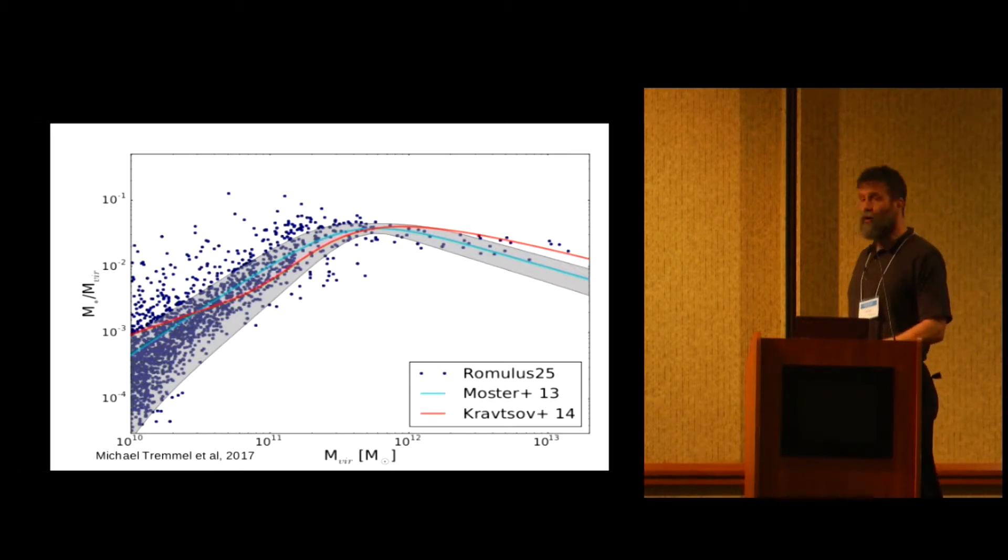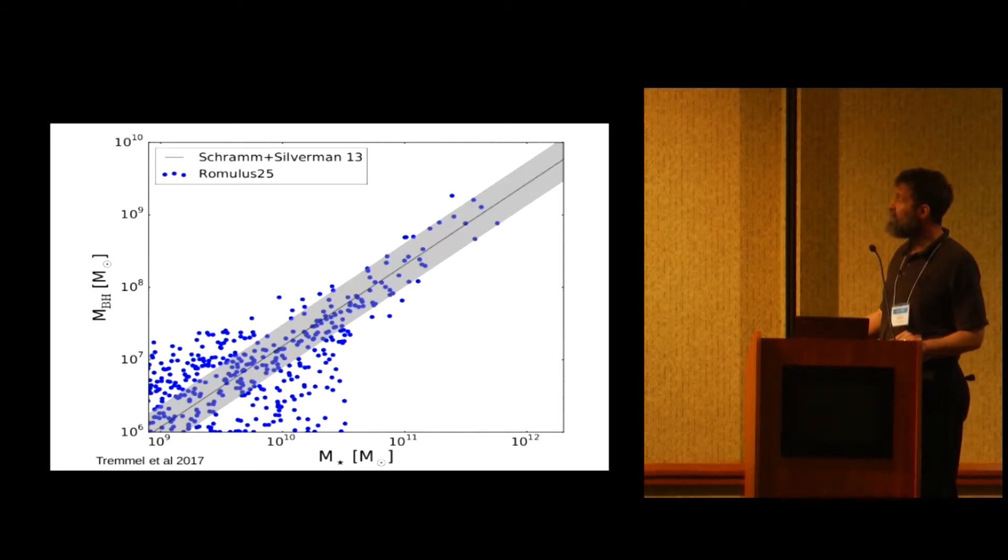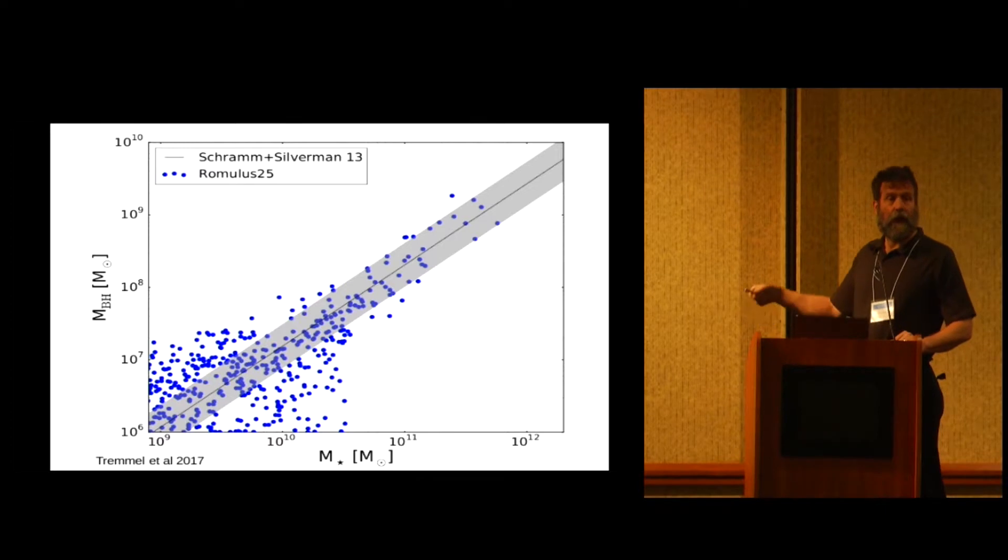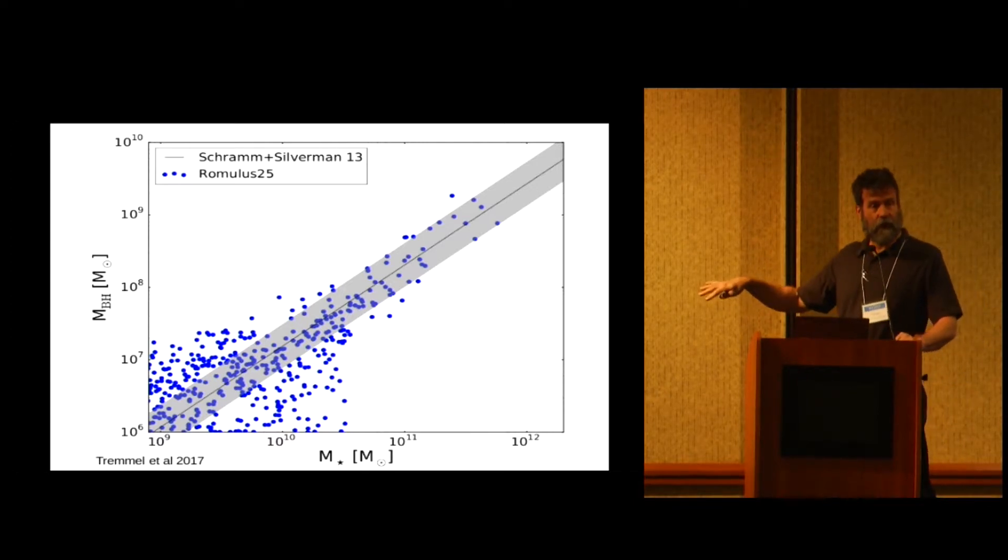Furthermore, we have black holes. There are other relationships that the black holes have. There's this observed relationship between the stellar mass of a galaxy and the mass of the central black hole. And we get both the observed relationship at high black hole masses and also there's an observed scatter of this relationship at the lower masses, which we also reproduced. And again, this is recent work that was just published based on our previous PRAC.